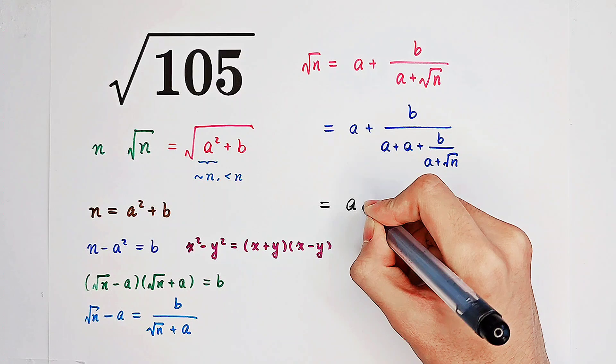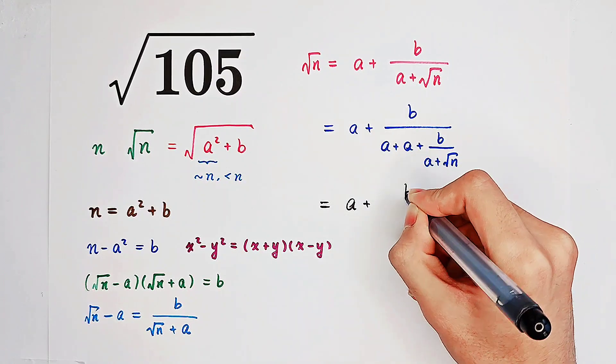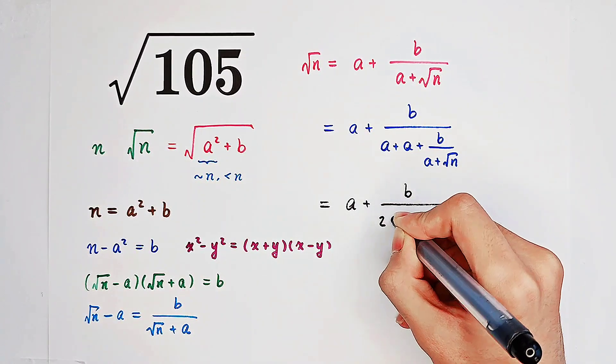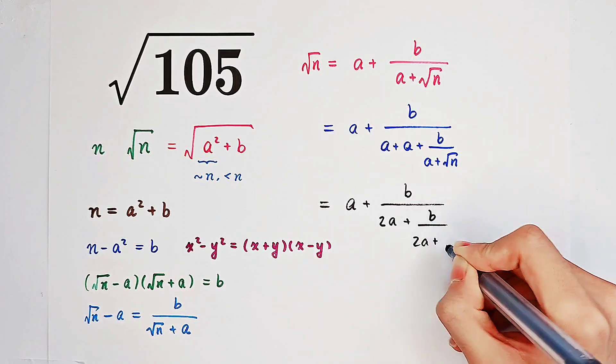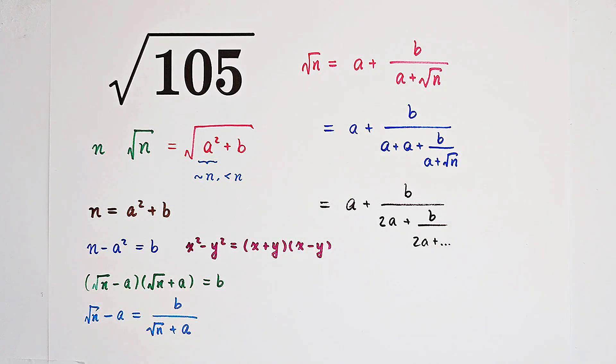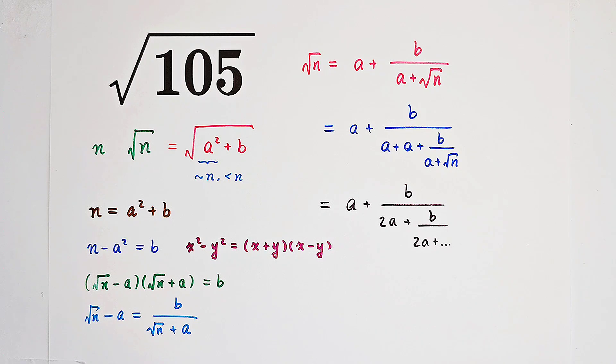That is, square root of n is a plus b over, here we have 2a, then plus b over 2a plus b over 2a plus b over 2a and so on. So our square root of n can just be written as a continued fraction consisting of a and b.